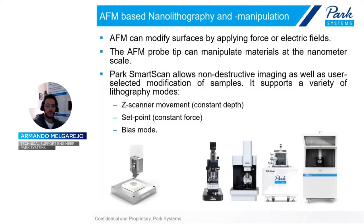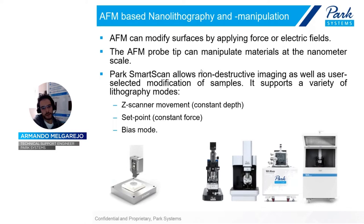AFM can modify surfaces by applying force or an electric field — these are the two modes through which nanolithography can be done. Besides nanolithography, we can also do nano-manipulation, which consists of modifying the surface at a nanometer scale using these two methods. It is always useful to have a non-destructive imaging option as we do in SmartLitho software, which is helpful after you've been modifying a surface — you don't want to modify it again using contact mode imaging. Park Systems software supports three options: Z-scanner movement, the set point option, and the bias mode.